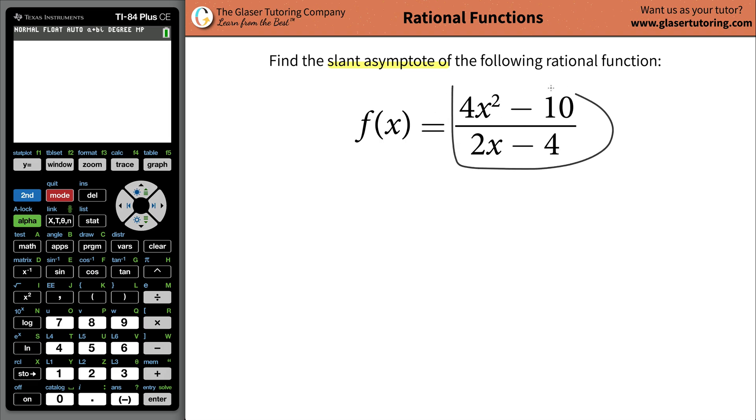So whenever you have a rational function, which just means you have a polynomial in the numerator and polynomial in the denominator, anytime the power of x in the numerator is greater than the power of x in the denominator, you're always going to have a slant asymptote.